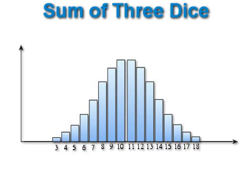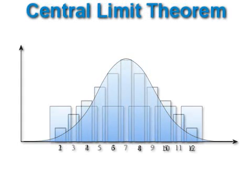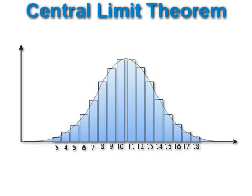If we roll three dice and sum them, we get a distribution with a bump in the middle that tapers at each end. This distribution looks a little like a bell curve, which is what those who understand statistics would expect. The more dice that are summed, the more the distribution looks like the familiar bell curve.